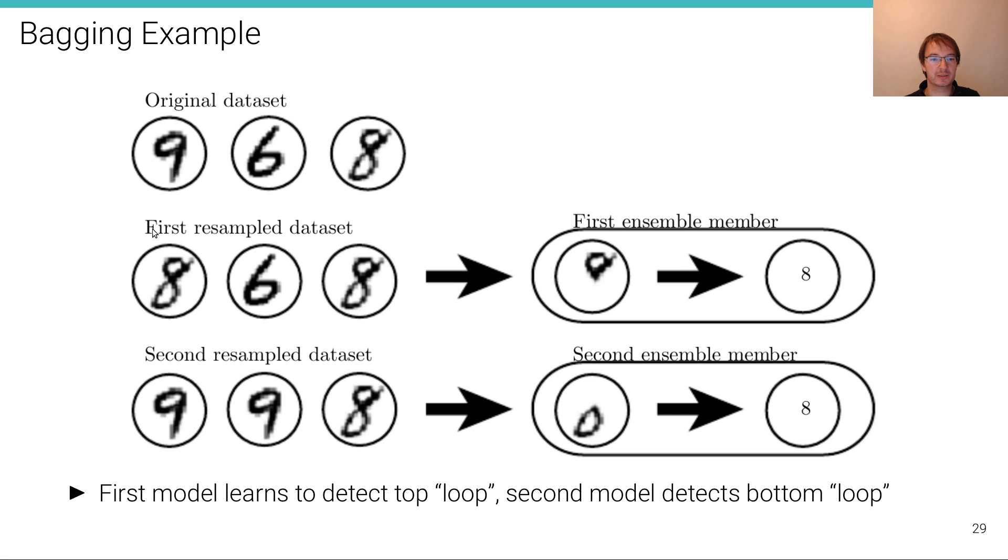And now what we do here is that this first element or this first member of the ensemble has a simpler task. It just needs to decide is it 8 versus 6. So basically it learns to detect a top loop here. It learns that if there is no loop here on the top, then it must be an 8. If there is no loop here on the top, it can't be an 8. If there is a loop here on the top, then it's likely that there is an 8. Similarly, the second ensemble member learns that if there is a loop or no loop at the bottom, then it can't be an 8. If there is a loop at the bottom, then it's likely to be an 8. So we get this more independent, more simple predictors that we can then average in the end.